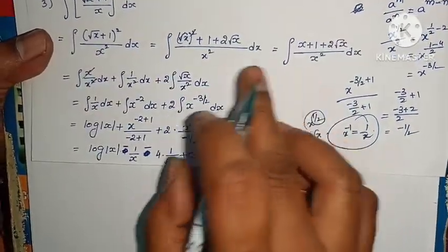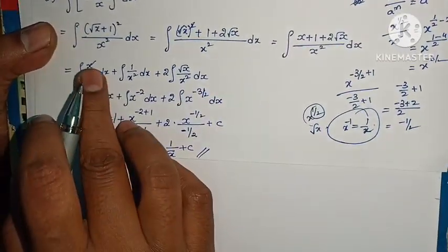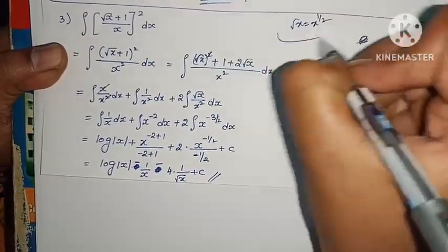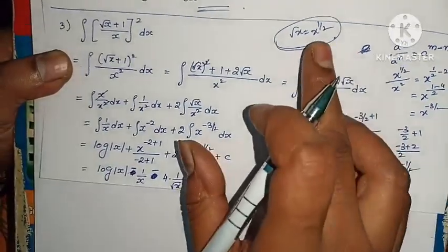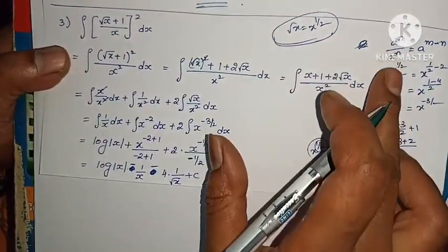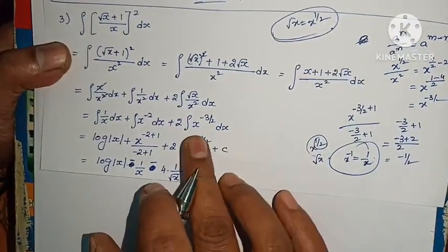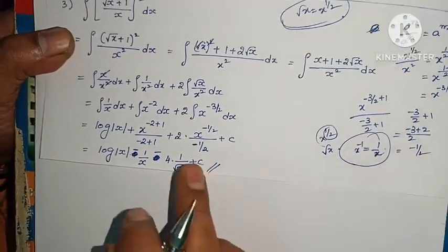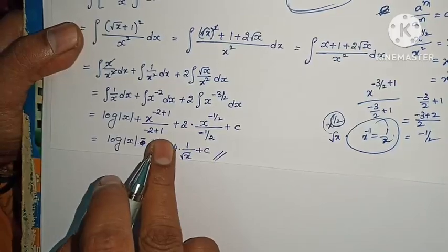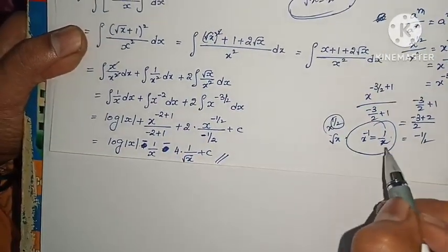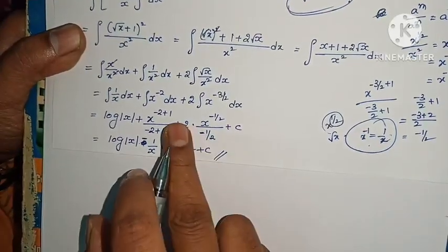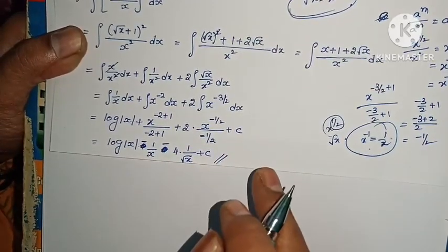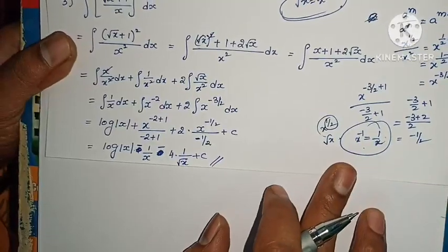Final step: log mod x, plus 2 times (dividing by minus 1 by 2 means multiplying by minus 2), so minus 2 times x power minus 1 by 2. x power minus 1 is 1 by x. x power minus 1 by 2 is 1 by root x. Simplifying: log mod x minus 1 by x minus 4 by root x... actually x power minus 1 by 2 equals 1 by root x, so the problem is complete.